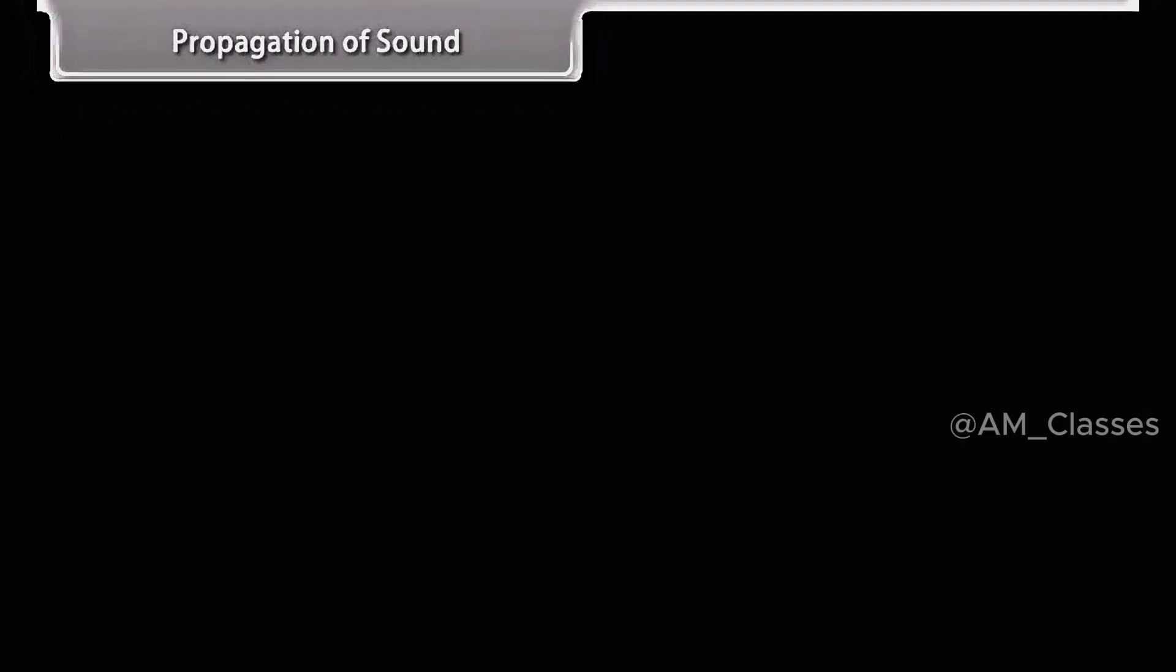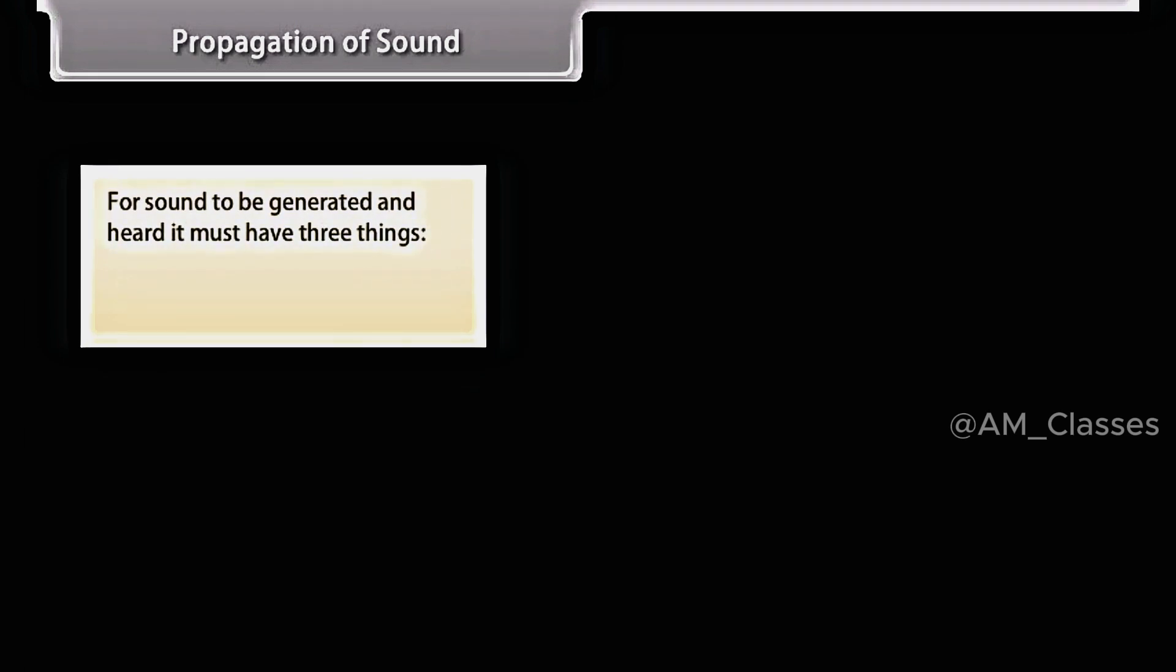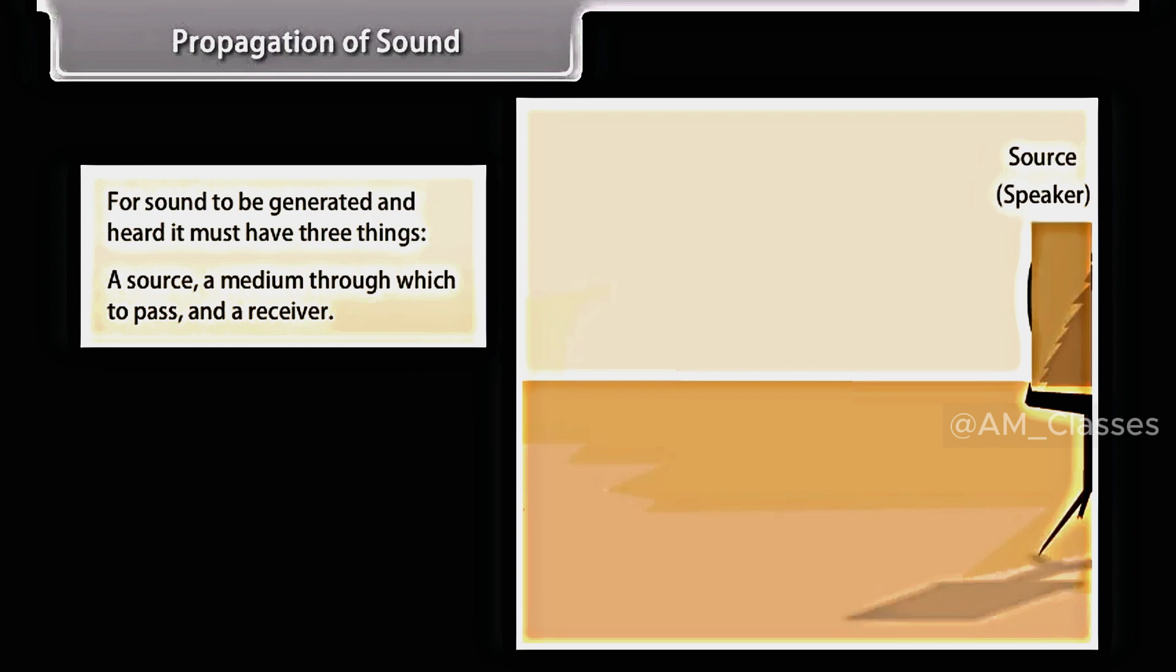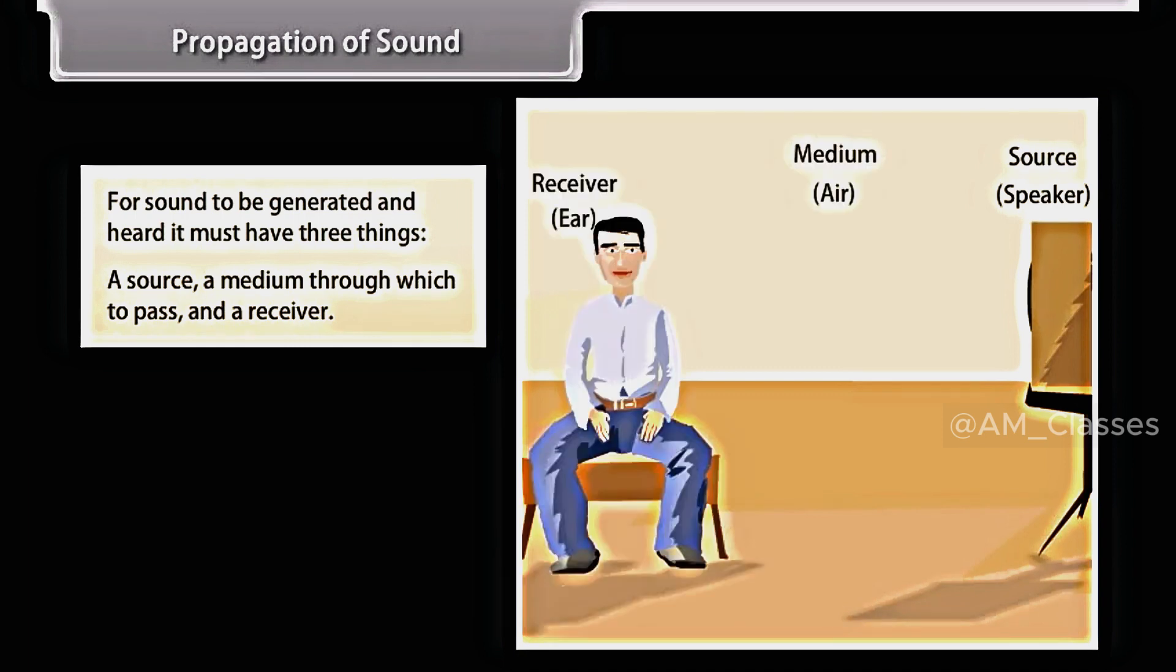Propagation of sound. For sound to be generated and heard, it must have three things. They are: a source, a medium through which to pass, and a receiver. Let us assume the source is the speaker's voice, the medium through which it is transmitted is air, and the receiver is the listener's ear.